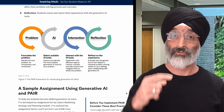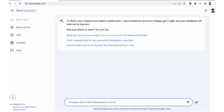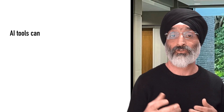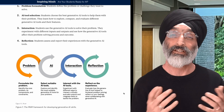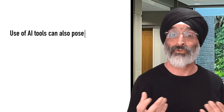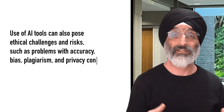I've added some links to his materials below. What I really like about the PEAR framework is that it encourages the use of AI as a learning collaborator. This is useful because it can help educators demonstrate to students how AI tools can help them with tasks such as research, communication, creativity and reflection. The PEAR framework also enables students to recognise that their use of AI tools can pose ethical challenges and risks such as problems with accuracy, bias, plagiarism and privacy concerns.